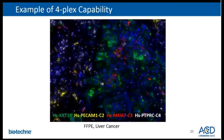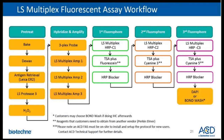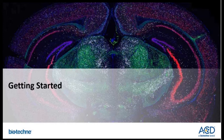Here is an image showing the V2 assay is capable of detecting four targets simultaneously. The Leica multiplex fluorescent assay has a very similar workflow to the manual V2 assay — the only difference is that it is fully automated with minimal hands-on time. If you are starting this assay on the Leica automated platform as a new user, our field application specialists will be onsite to help you set up the protocol and provide training. Next, we will discuss the details of how to get started.